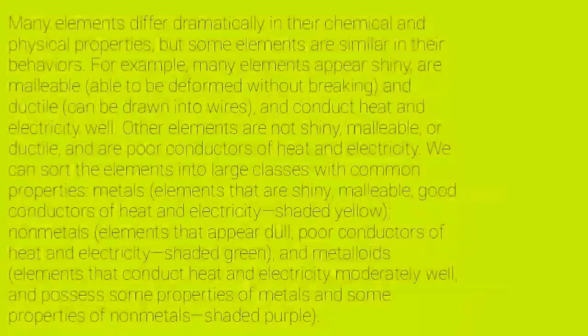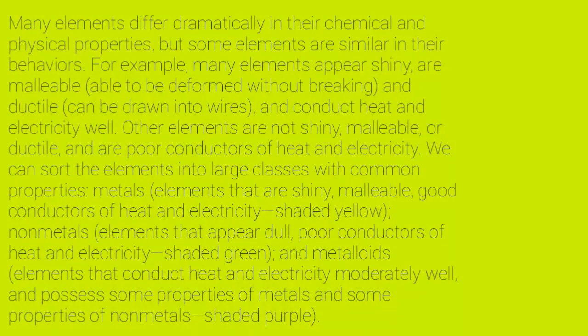Many elements differ dramatically in their chemical and physical properties, but some elements are similar in their behaviors. Many elements appear shiny, are malleable (able to be deformed without breaking), and ductile (can be drawn into wires), and conduct heat and electricity well. Other elements are not shiny, malleable, or ductile and are poor conductors of heat and electricity. We can sort the elements into large classes: metals — shiny, malleable, good conductors, shaded yellow; nonmetals — dull, poor conductors, shaded green; and metalloids — moderate conductors with some properties of both metals and nonmetals, shaded purple.